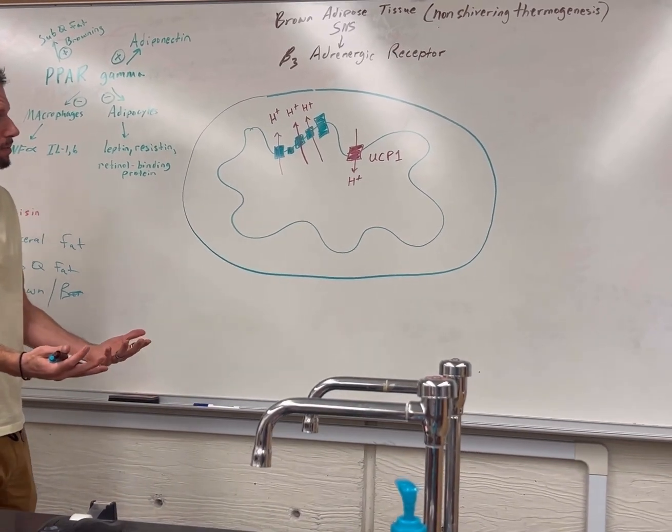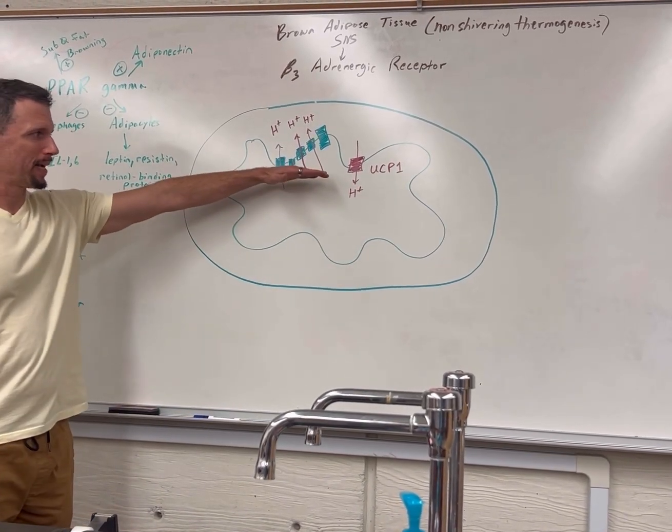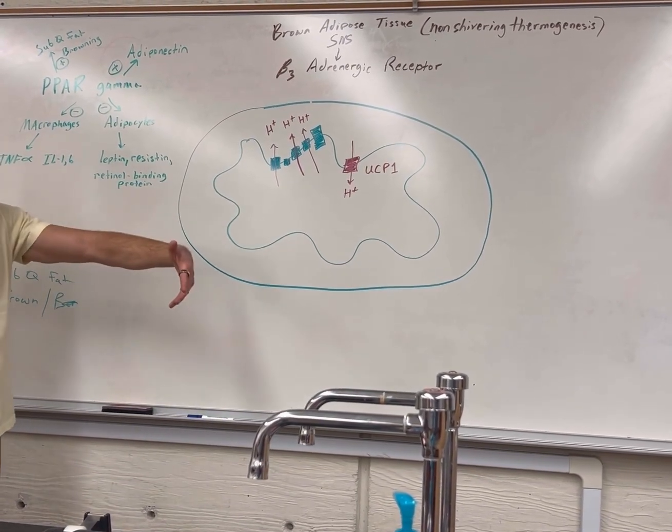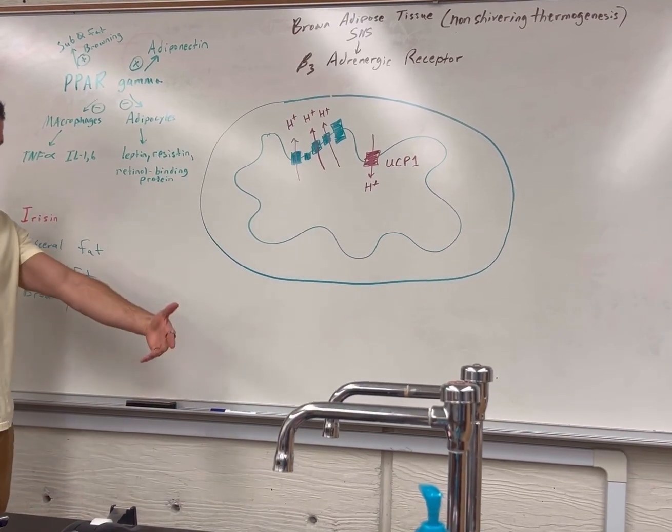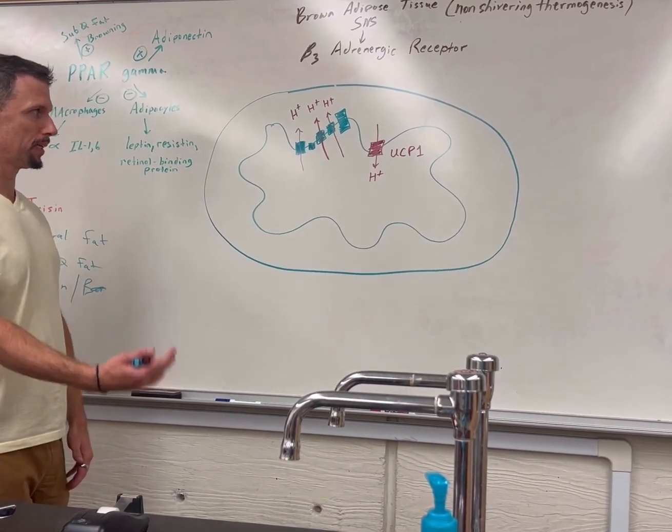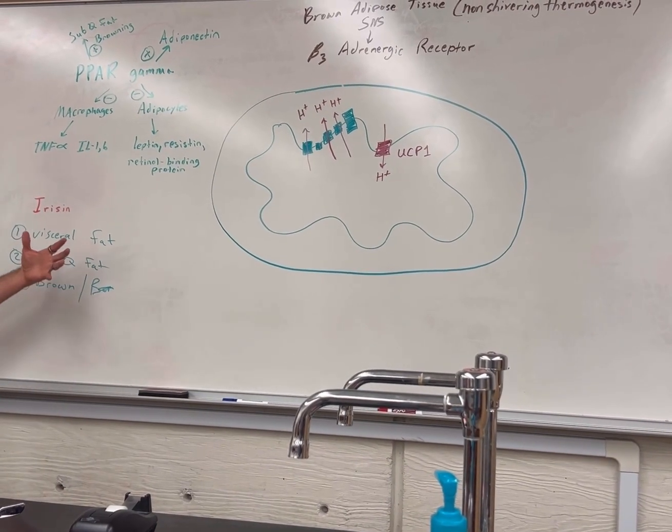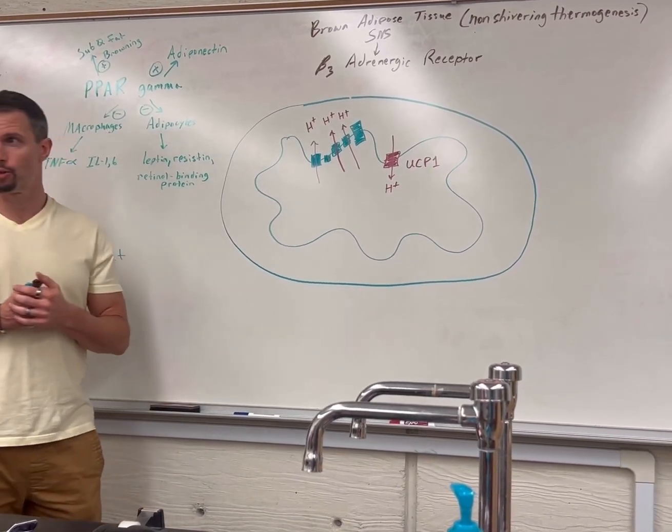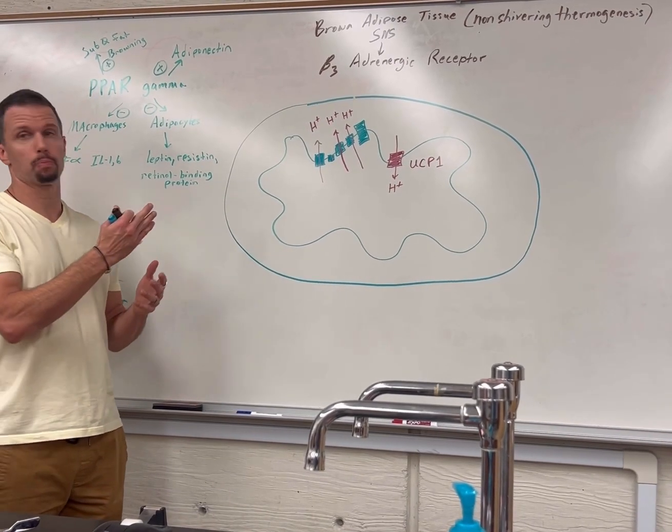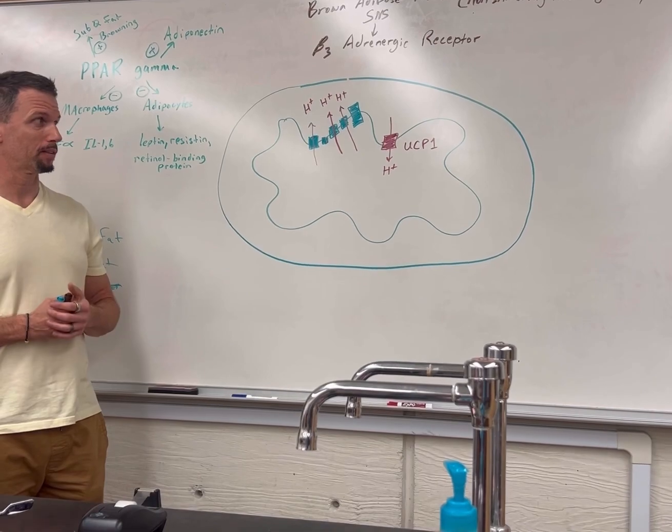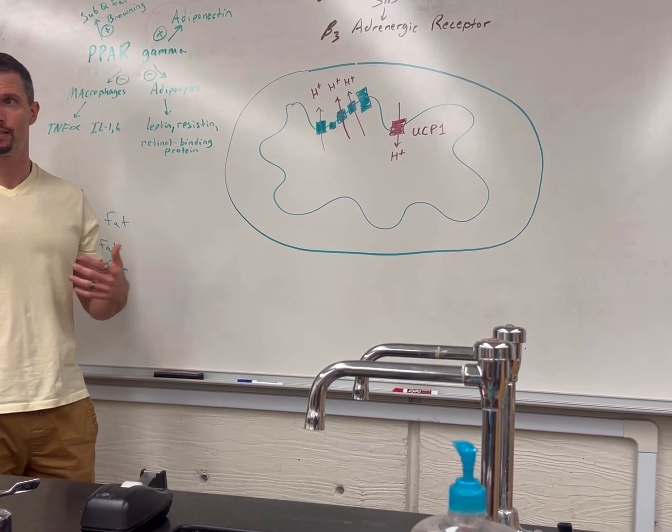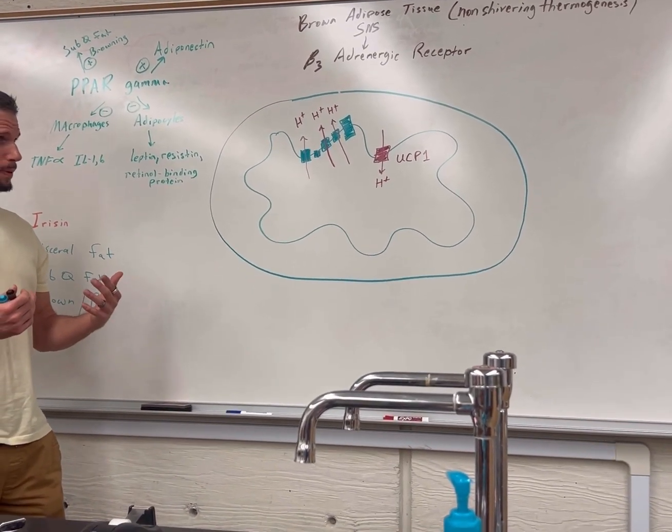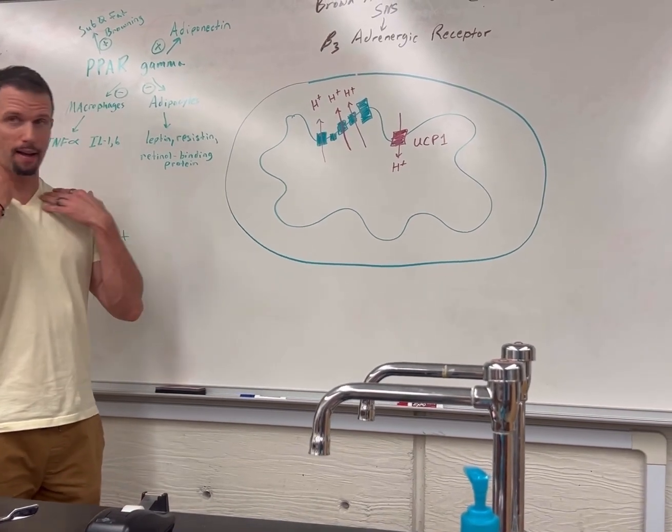It's increasing your metabolism. It's less efficient but good because we're not making ATP, so our ATP levels are low. That causes more lipolysis breakdown of fat and more glycolysis to break down sugar. It's so metabolically active that if you do a PET scan with fluorodeoxyglucose, it'll go right to this brown adipose tissue, kind of like a tumor.